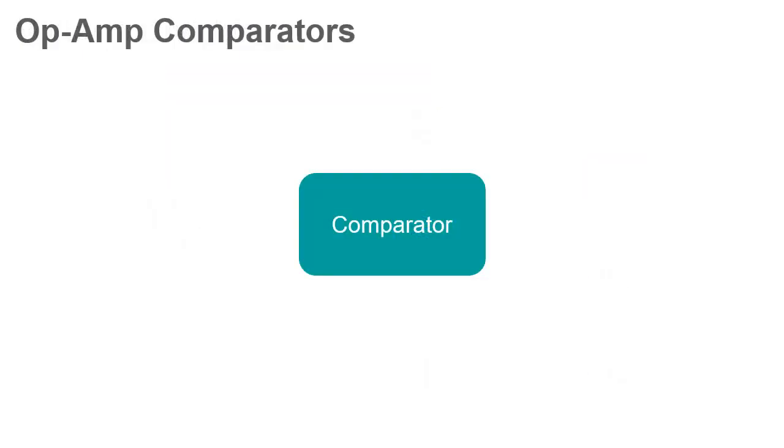A comparator is a circuit that compares two input voltages and outputs a digital signal depending on which input is larger. Often, one input is a known reference voltage and the other is unknown.